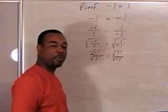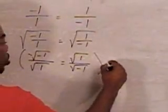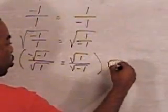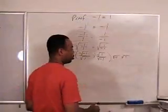From here, I'm going to multiply both sides by the LCD, or the least common denominator, which would be negative 1 times square root of 1.